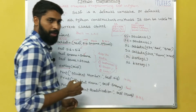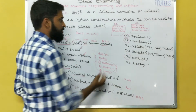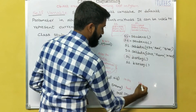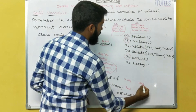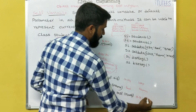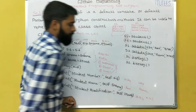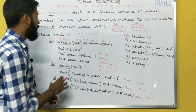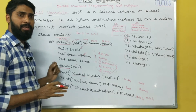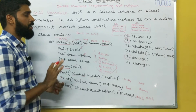Next, S2.display is called. Now the current object is S2. It displays SID 2345, name Ramu, and qualification Mtech. I hope you all understand. Simply saying, the self variable represents the current object.